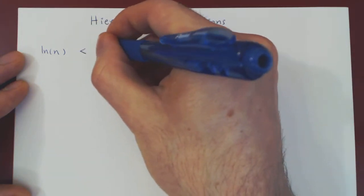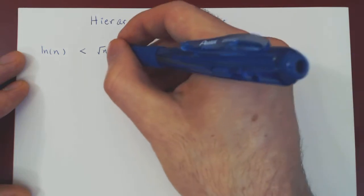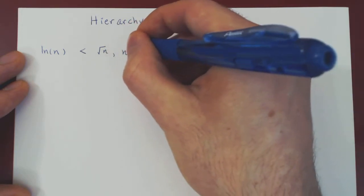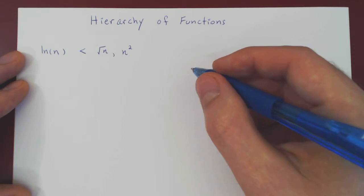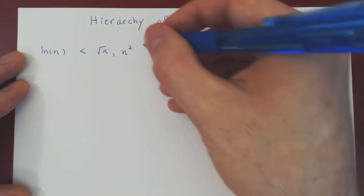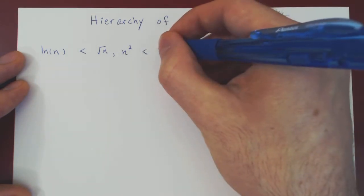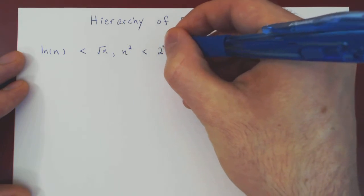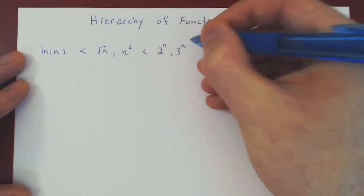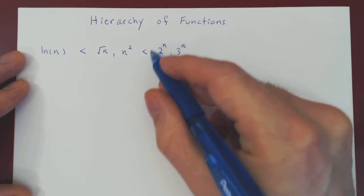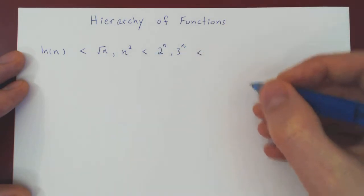Power functions include powers of n — you could take the root of n, just n to the one half, n squared, n to the 7, and so forth. Now in turn, power functions are much smaller than exponential functions, like 2 to the n, 3 to the n, and so forth. And these are much smaller than the factorial.